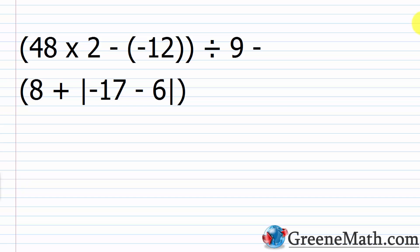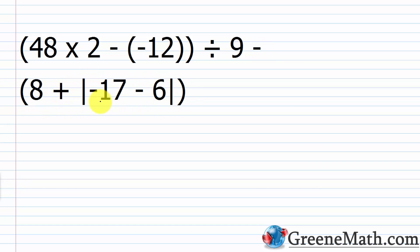We're going to start out with this. We have inside of parentheses 48 times 2 minus a negative 12, then we're dividing by 9, then we're subtracting away. Inside of parentheses, we have 8 plus, and then inside of absolute value bars, negative 17 minus 6.